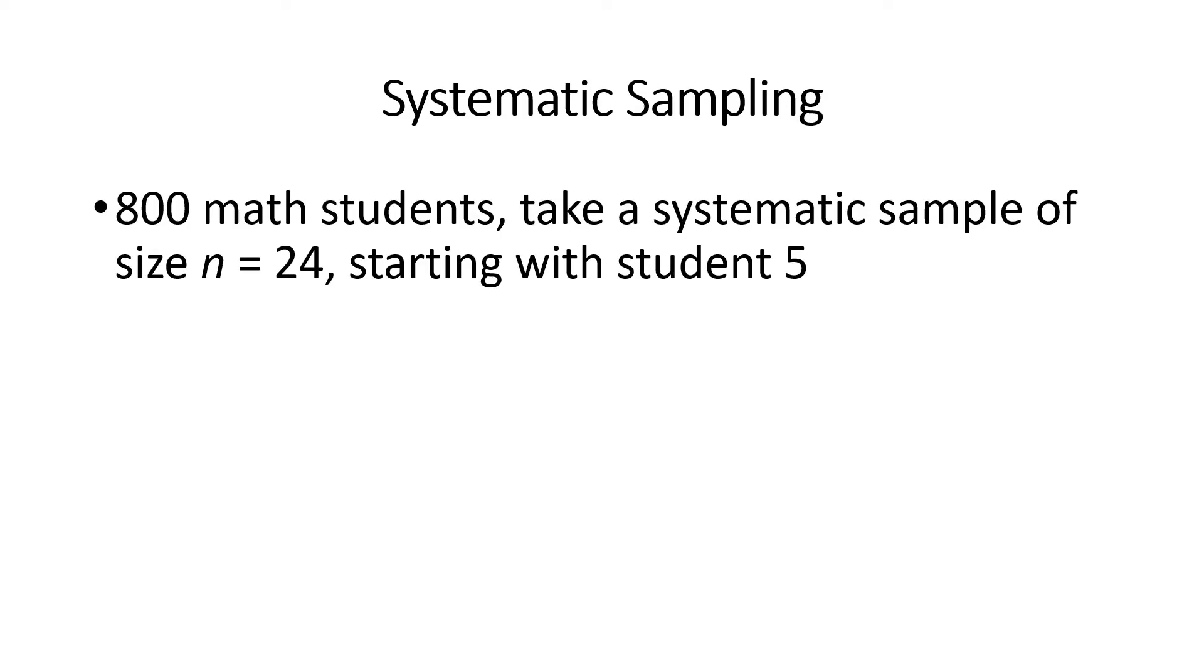Suppose there are 800 math students at your school and we want to take a systematic sample of size n equals 24, starting with student 5. That first student is our value of p, and that's usually found using a random number generator, some kind of technology, drawing a card from a deck, things like that.